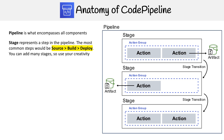Then you have stages. We have multiple stages, and they represent a step in the pipeline. The most common setup would be source, build, and deploy. When you first set up CodePipeline, they force you to set up these three stages.